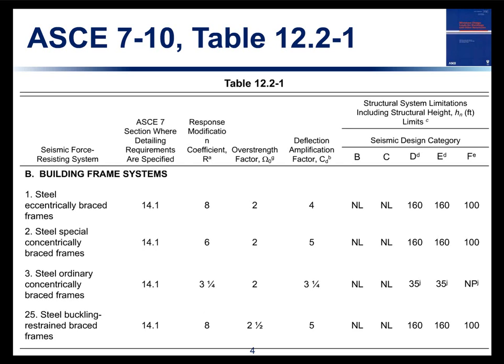In ASCE 7-10, we have the familiar Table 12.2-1 that lists the building seismic force resisting systems for buildings. I've taken an excerpt of that to show you the steel ones we'll be talking about today, including the eccentrically braced frames, special concentrically braced frames, ordinary concentrically braced frames, and of course the BRBF — the buckling restrained braced frames.